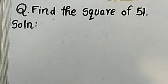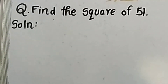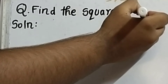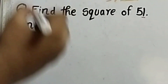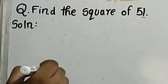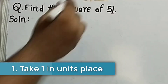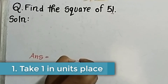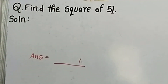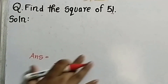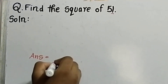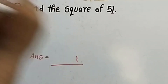Now let us solve a question: find the square of 51. We will solve this with the technique we have learned. Since 1 is the unit digit, we write 1 in the units place.